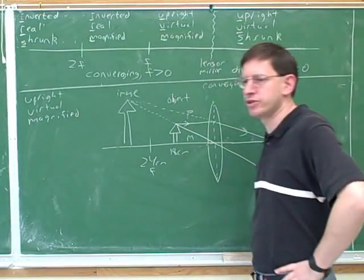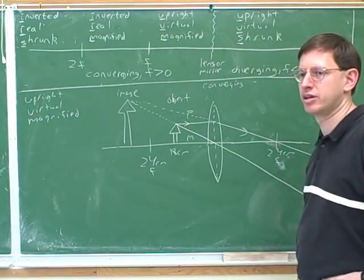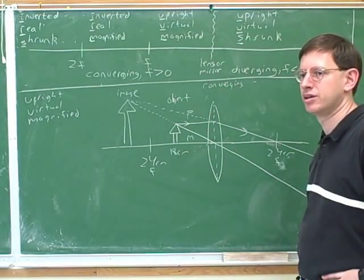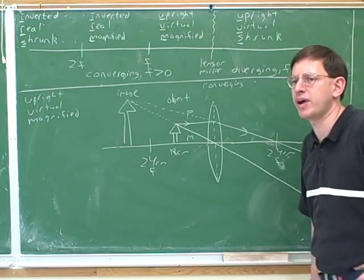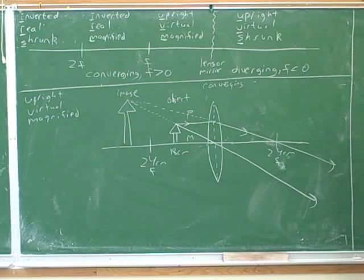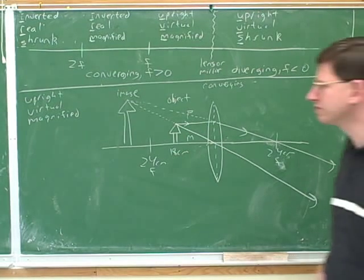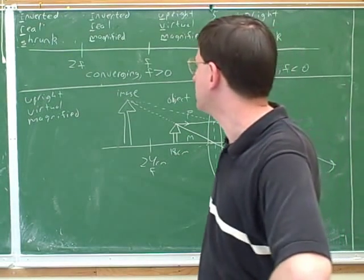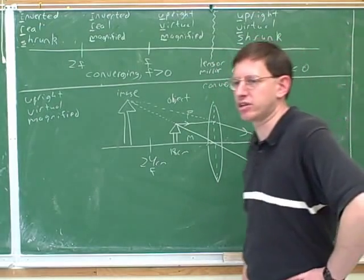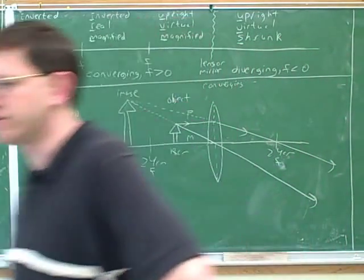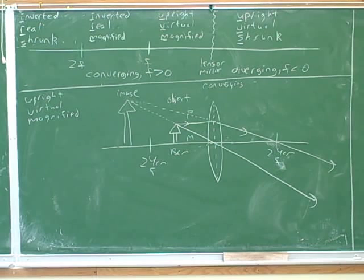So did this come out to be a real or a virtual image? It's a real image. Now let's review how to decide whether something's real or virtual. We have two different definitions of real and virtual. One definition is: a real image is on the same side as the outgoing light, and a virtual image is on the opposite side to the outgoing light.